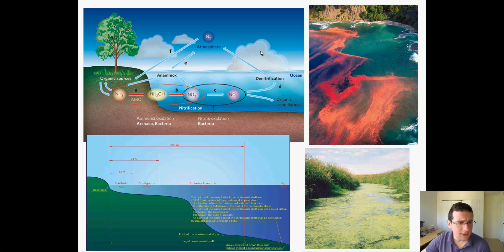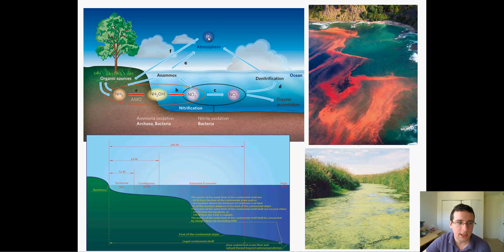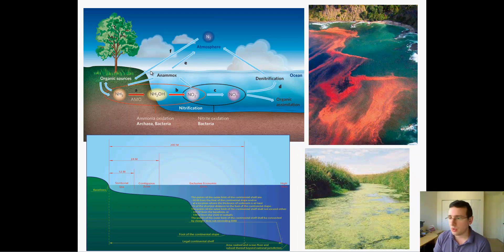The nitrates and nitrites are assimilated by life forms and used to make proteins. This is a picture that shows you the biochemical nitrogen cycle, where the ammonia produced by the decomposition of life forms can be transferred by ammonification into nitrates and nitrites, and then transferred again by denitrification into nitrogen in the atmosphere. There are some bacteria called nitrogen-fixing bacteria which also fixate nitrogen.